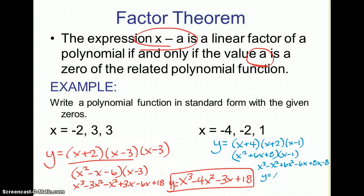Put together all my like terms, my final polynomial is x cubed plus five x squared plus two x minus eight. And that would be my polynomial in standard form that has those zeros.